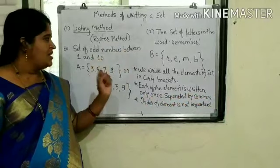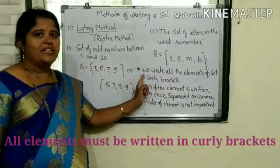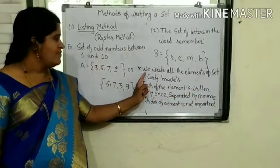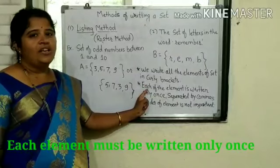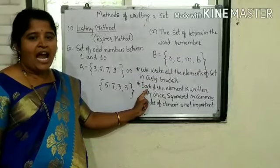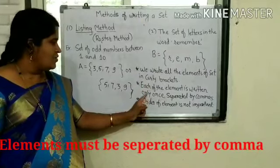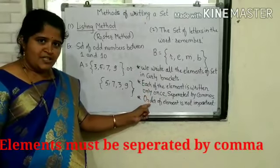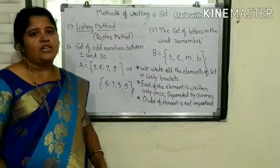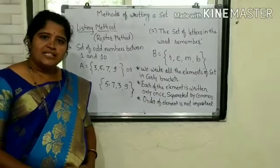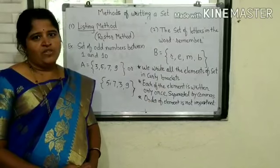In this method, we write all the elements of a set in the curly bracket. Each of the elements is written only once and it is separated by commas. Also, in this method, the order of elements is not important, but it is necessary to write all the elements of the set.